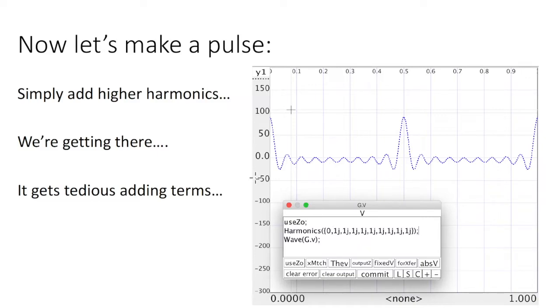So let's make a pulse. Simple enough. A pulse is all the harmonics phase aligned and with unity amplitude. So here I have 1j for the first harmonic, 1j for the second, 1j for the third, and I just keep going. And as I add more and more harmonics, this becomes narrower, narrower, and the pulse, and the ripple down here becomes less.